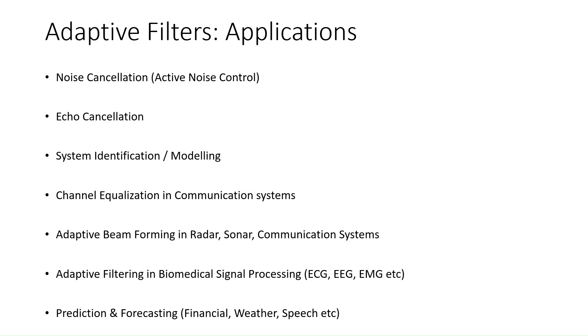Before we jump into the code, let's understand where adaptive filters are used. These filters have a wide range of applications, from noise cancellation and echo reduction to system modeling and channel equalization in communication systems. They are also crucial in adaptive beamforming and medical signal processing like ECG and EEG signals.